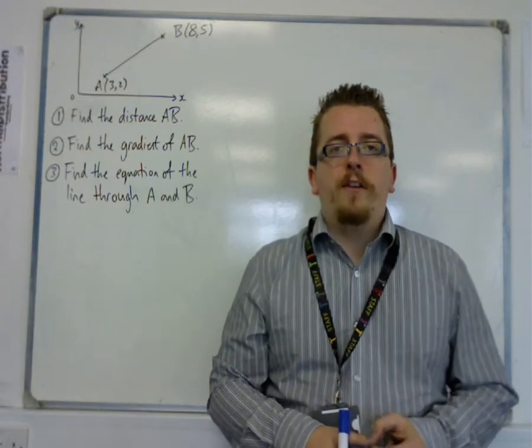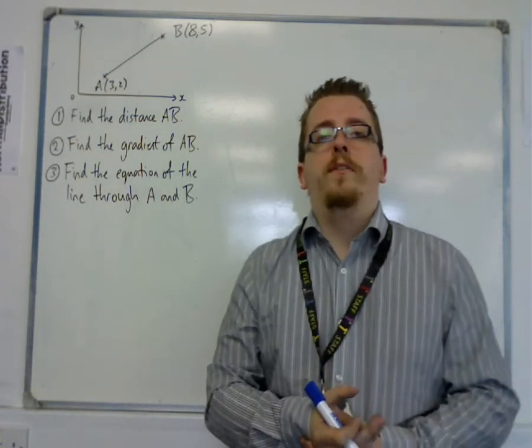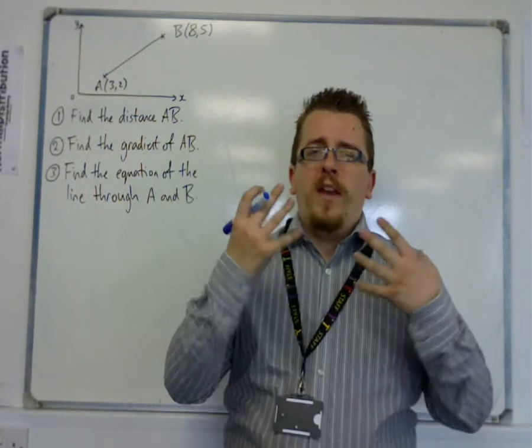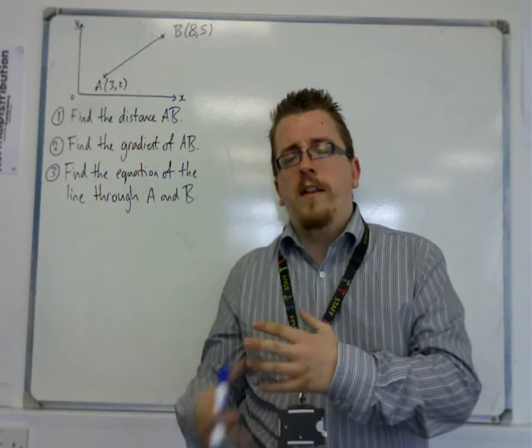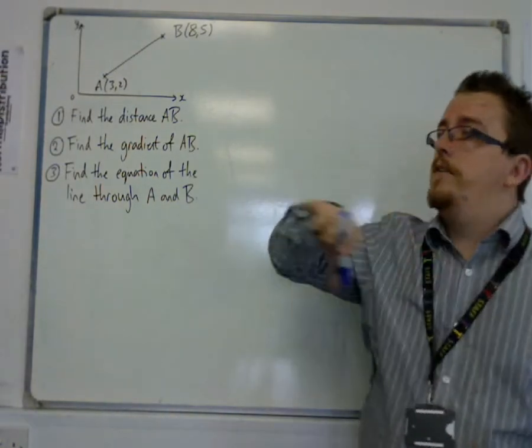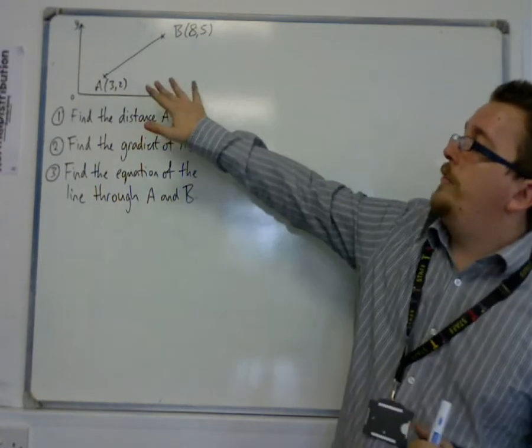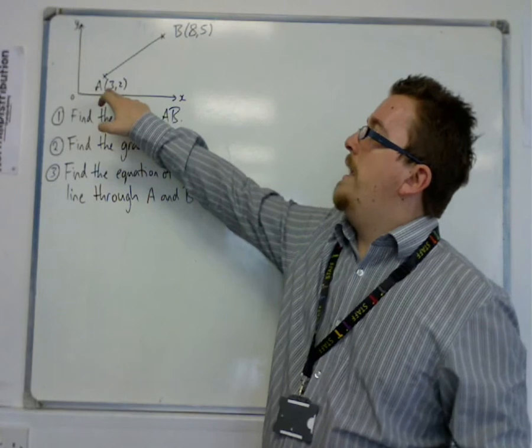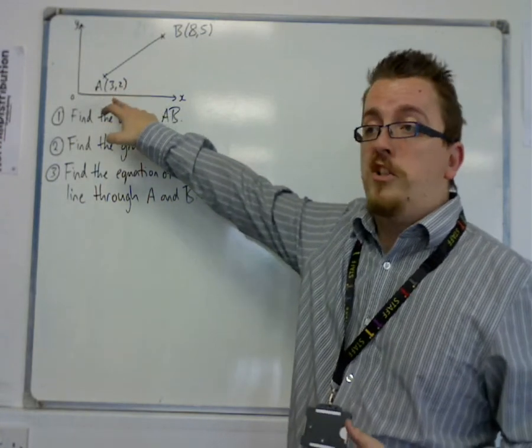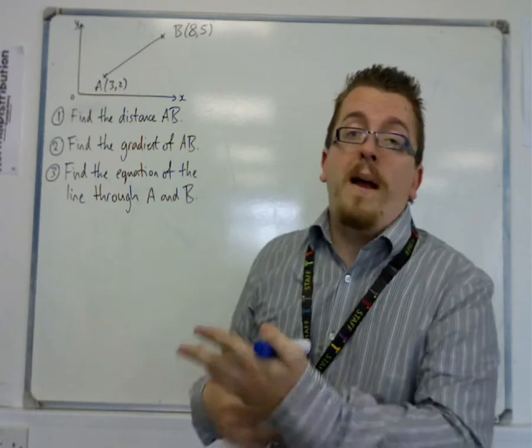Okay, what I'm going to be looking at in this video is straight line equations and taking linear graphs, linear equations, and looking at them graphically. In this, we're going to use an example where I've got these two coordinates. A has coordinates 3, 2, and B has coordinates 8, 5. And we're going to find a few things about them.